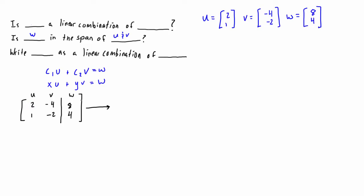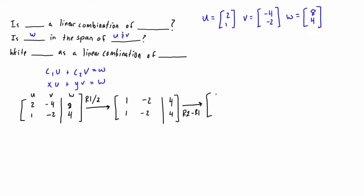What we want to do is get this down into reduced row echelon form by applying some elementary row operations. The first one that is easiest is to get a 1 in the leading position — so we do row 1 divided by 2, giving us (1, -2 | 4). Row 2 is unaffected, so it stays as (1, -2 | 4). Next we want to get a 0 in the bottom-left, so we do row 2 minus row 1: 1-1=0, -2-(-2)=0, and 4-4=0.